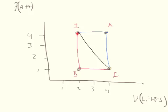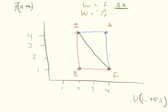In the last situation, path IBF, from I to B there is no change in volume. When the volume doesn't change, there is no work being done. So the work is only from B to F — the area under that portion of the curve — which equals the final pressure times the change in volume. So the work is equal to negative of the final pressure times the change in volume.